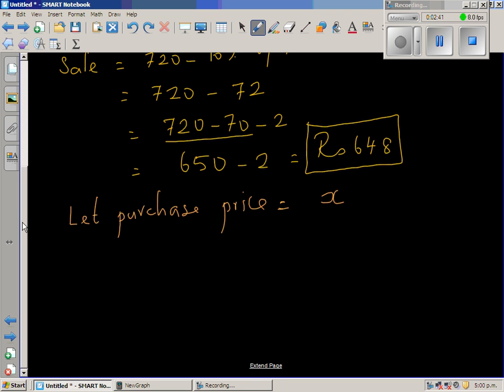Okay, and then on this purchase price, if you add 20%, you get 648. So can I say x, which is the purchase price, plus 20% of x gives you 648. So this is a simple linear equation.